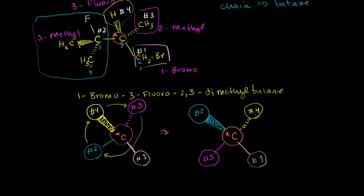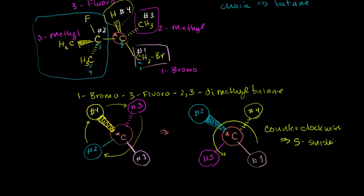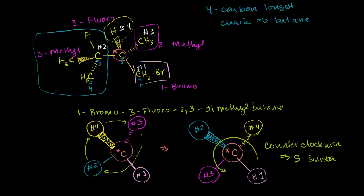Now that the number four group is behind the molecule, we simply determine whether going from one to two to three is clockwise or counterclockwise. Going from one to two to three, we have to go counterclockwise — to the left. Since we're going counterclockwise, this is S, or sinister, which is Latin for left. So the complete name of this molecule is S-1-bromo-3-fluoro-2,3-dimethylbutane.